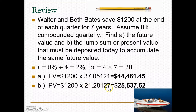The I and N values intersect at this value on the present value table. We multiply it by the $1,200 payment, which means we would need $25,537.52 deposited today. You could put it there, forget about it, and in 7 years you would find a balance on the account equivalent to Walter and Beth's original plan of regular $1,200 deposits every quarter.